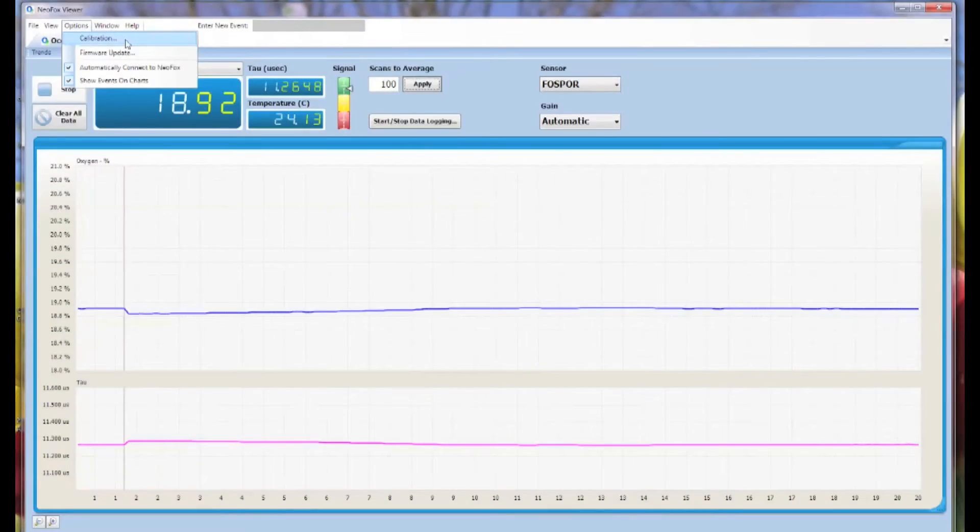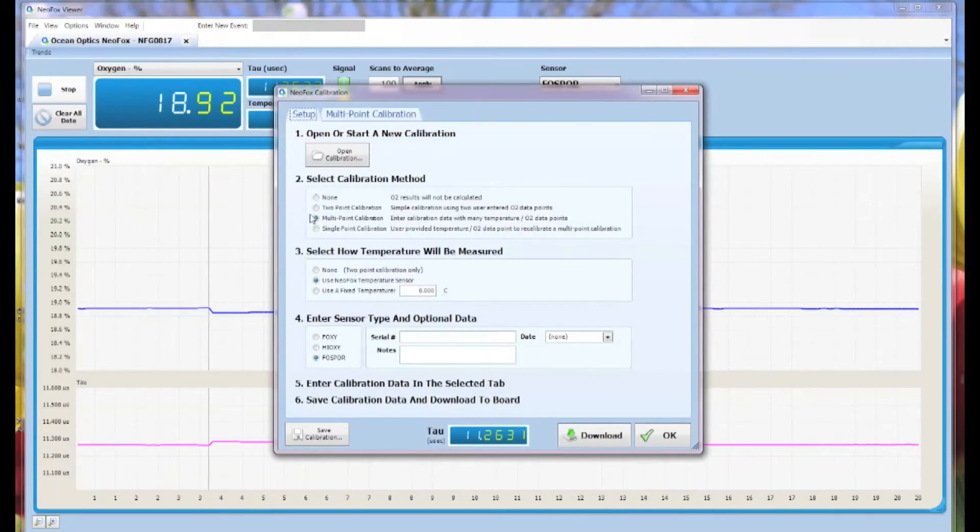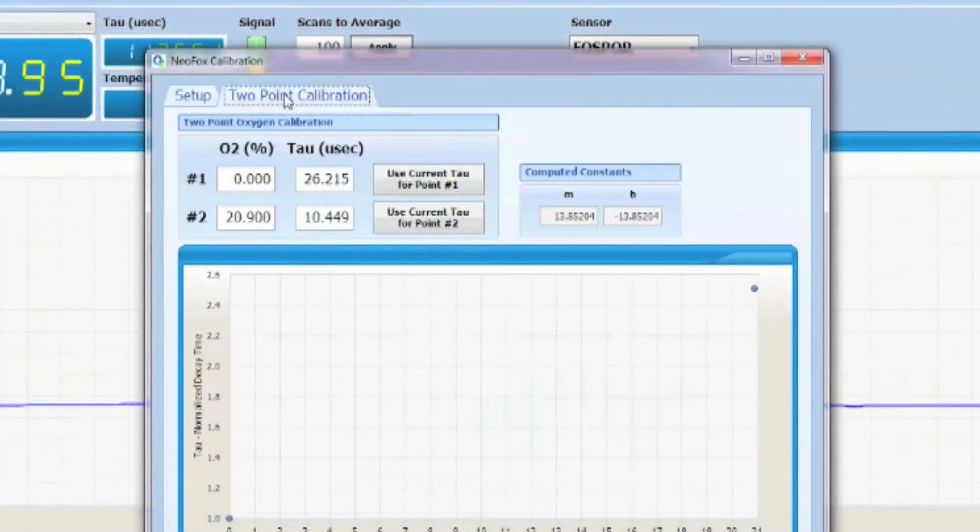Again, you will go up into options, click calibrations, and go into the setup box. Click two-point calibrations and make sure you have the correct chemistry chosen at the bottom of that box. You're going to click use current tau for point two.